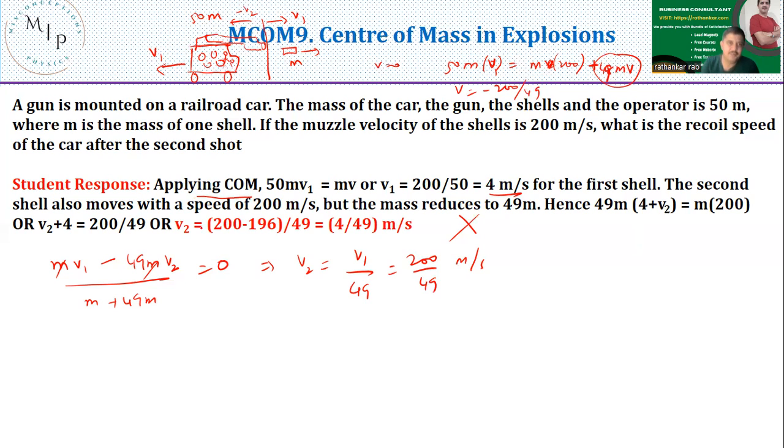Now, let us solve this problem. So the vehicle along with the gun is now moving backwards with a speed of 200 divided by 49. This is your speed. Now once again, applying center of mass. The second shell has been loaded. This is the mass, this moves at 200. So once again, center of mass is conserved. What happens? This is already moving at this velocity backwards. Already this was moving, then additional velocity V2 was added.